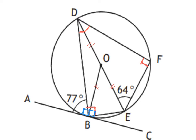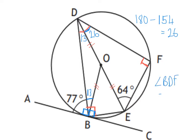Then we're going to look at the other side of that triangle. Using the 77: 77 plus this small angle make 90 degrees, so that one must be 13. Using isosceles triangles, that angle up there is also 13. So I now have enough to get angle BDF. Angle BDF is 13 plus 26, which is 39 degrees.